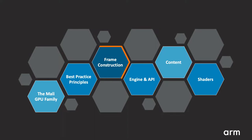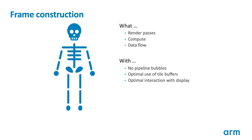In this section, we'll look at how you make good decisions about how to control the flow of data through your application to make the best use of a device's resources. To get the best performance out of a tile-based renderer, one of the most important things to get right is the frame graph. This defines the bare bones of the frame: the render passes, the compute passes, and how the data flows between them.